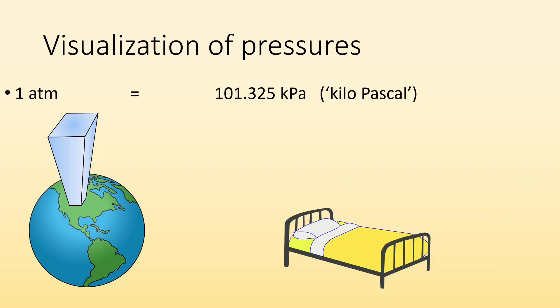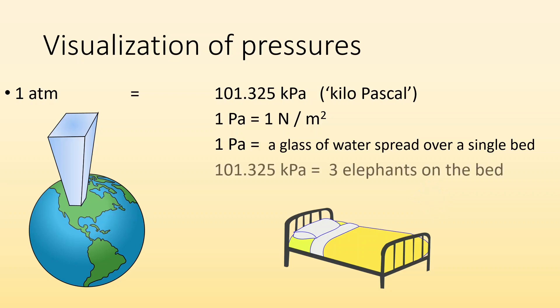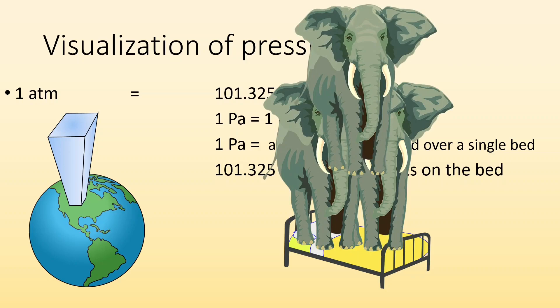One atmosphere is also another unit is the kilo pascal or kPa. So one atmosphere is equivalent to 101.325 kilo pascals. So one pascal is a newton of force divided by a square meter. The equivalent for one pascal is roughly a glass of water spread over an entire single bed. So one pascal not a whole lot of pressure. But when you talk about one atmosphere being 101.325 kilo pascal thousand pascals it's equivalent to having like three elephants on that very same bed. So kind of a lot of pressure.